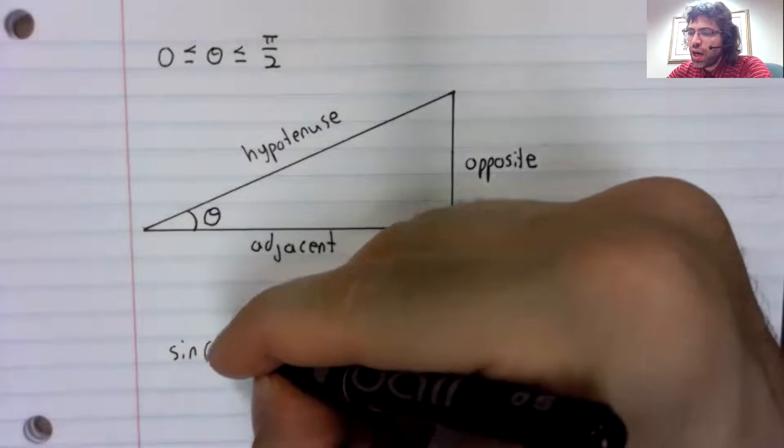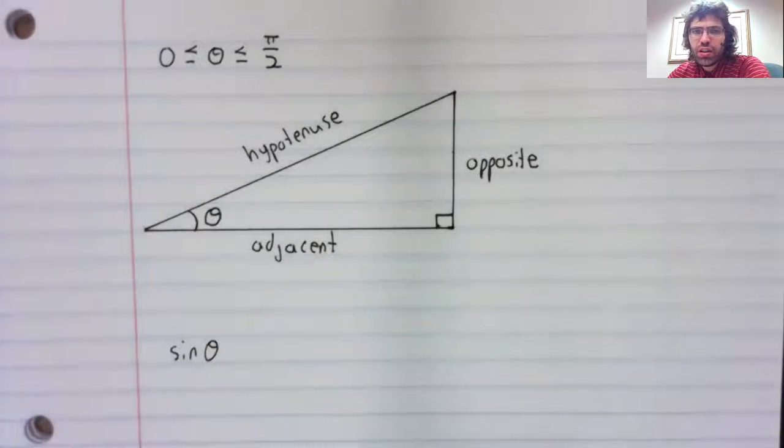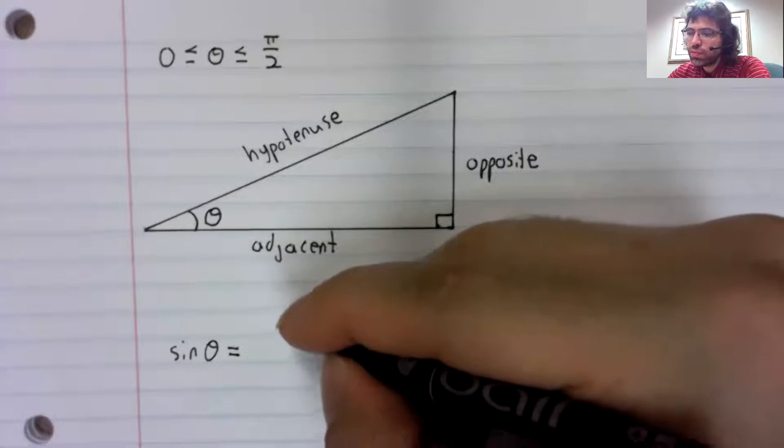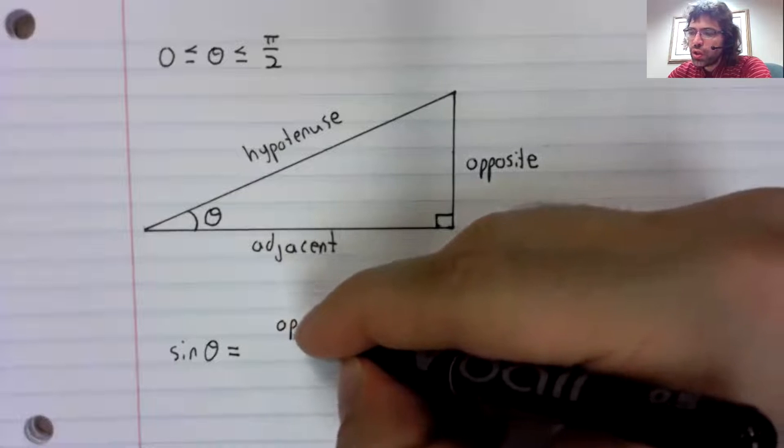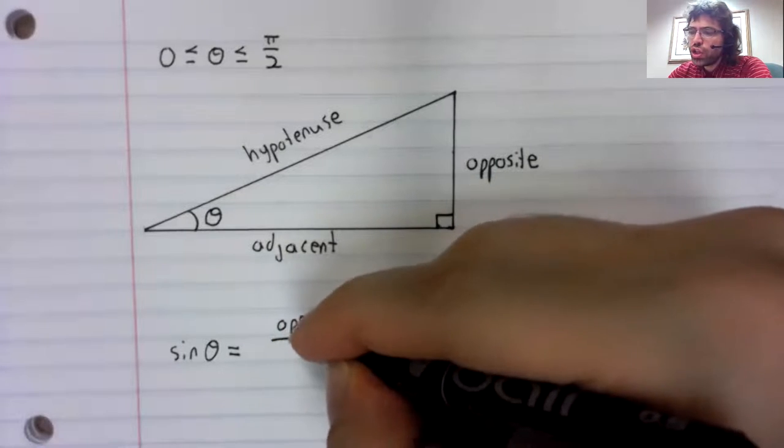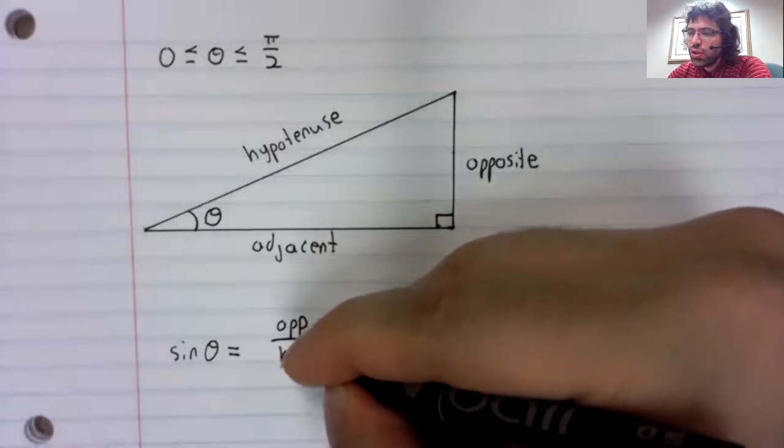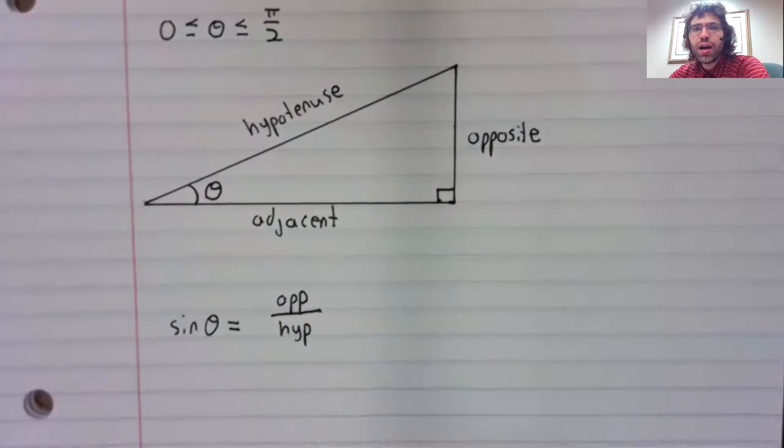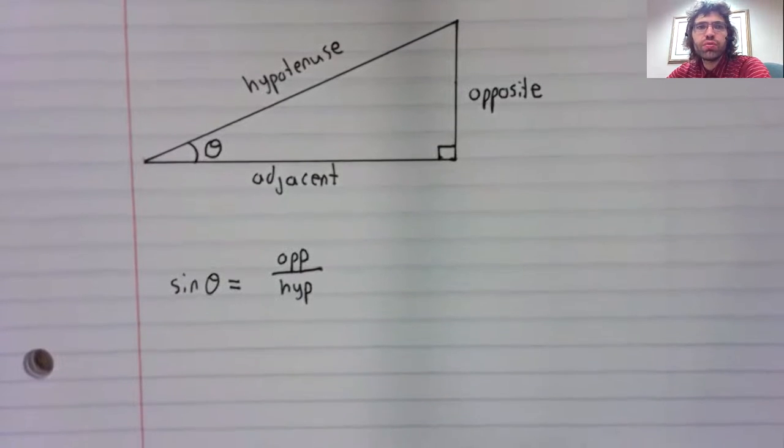The sine of theta, it turns out, is going to be the ratio of two sides. It's the opposite side over the hypotenuse.